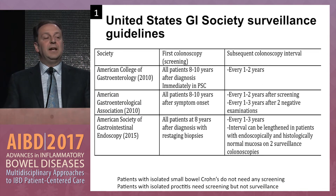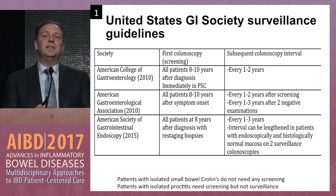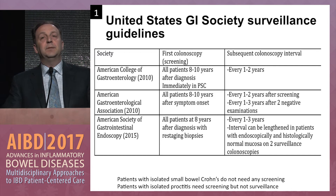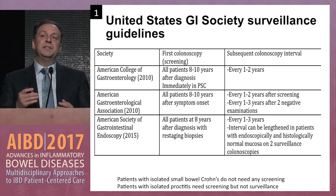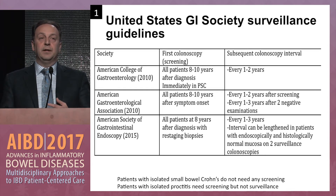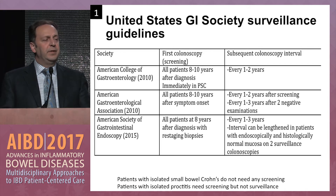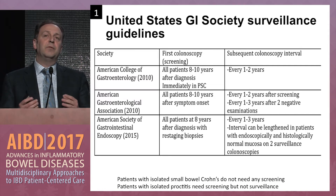Where do the guidelines stand on when to perform surveillance and follow-up? The initial surveillance exam is typically 8 to 10 years after disease onset depending on the society. For the AGA it's sometimes after symptom onset. Immediately in primary sclerosing cholangitis. Subsequent surveillance intervals vary but can be summarized as anywhere from 1 to 3 years, and nowhere are we doing surveillance up to 5 years.